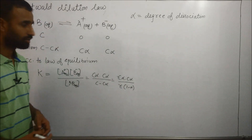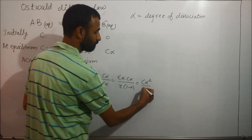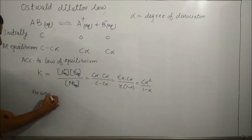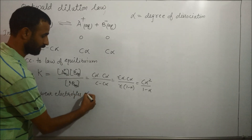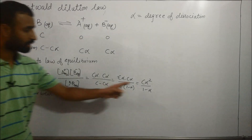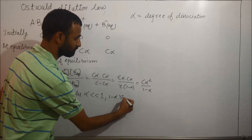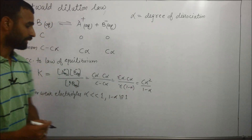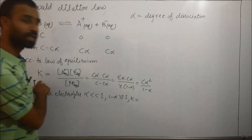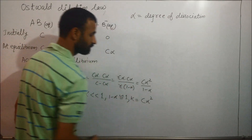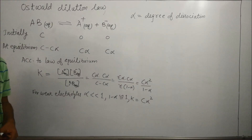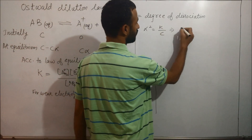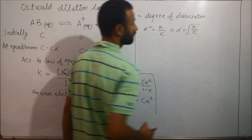Once C is cancelled, we get K equals C alpha squared over one minus alpha. Now for weak electrolytes, alpha is very much less than 1. As alpha is very very less than 1, one minus alpha is very close to 1, so alpha can be neglected. Therefore, equilibrium constant K equals C alpha squared.